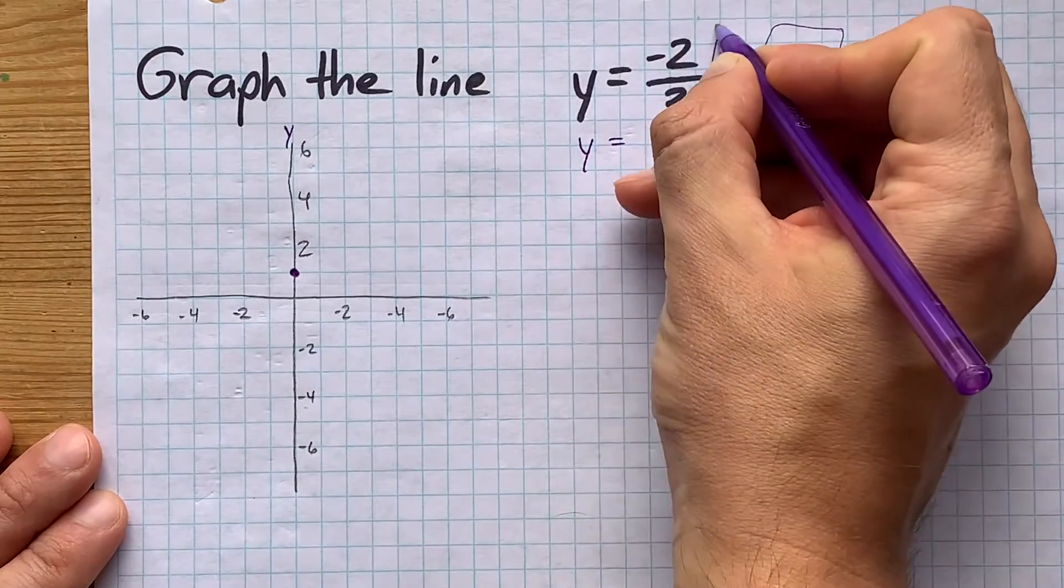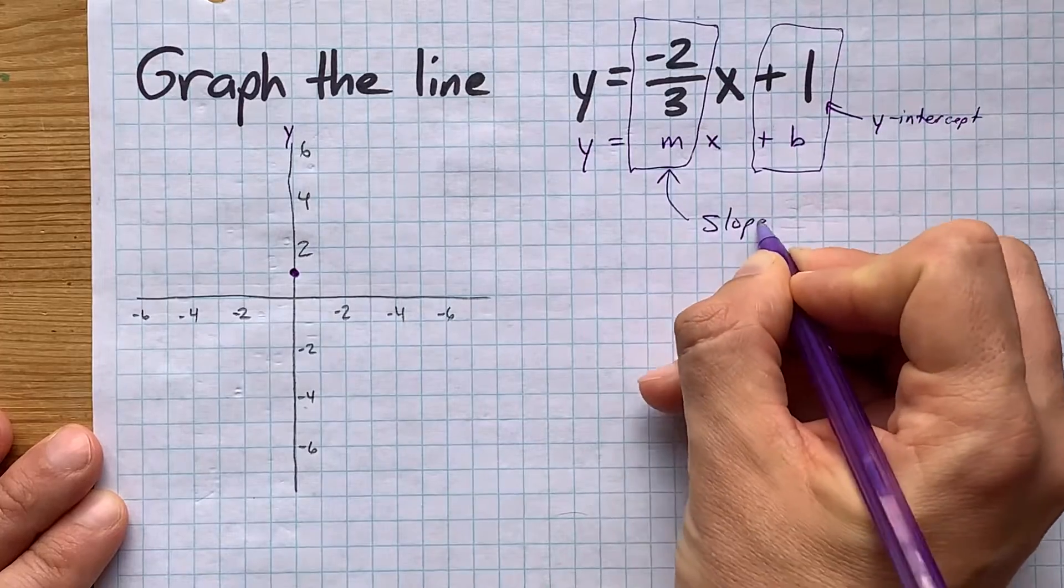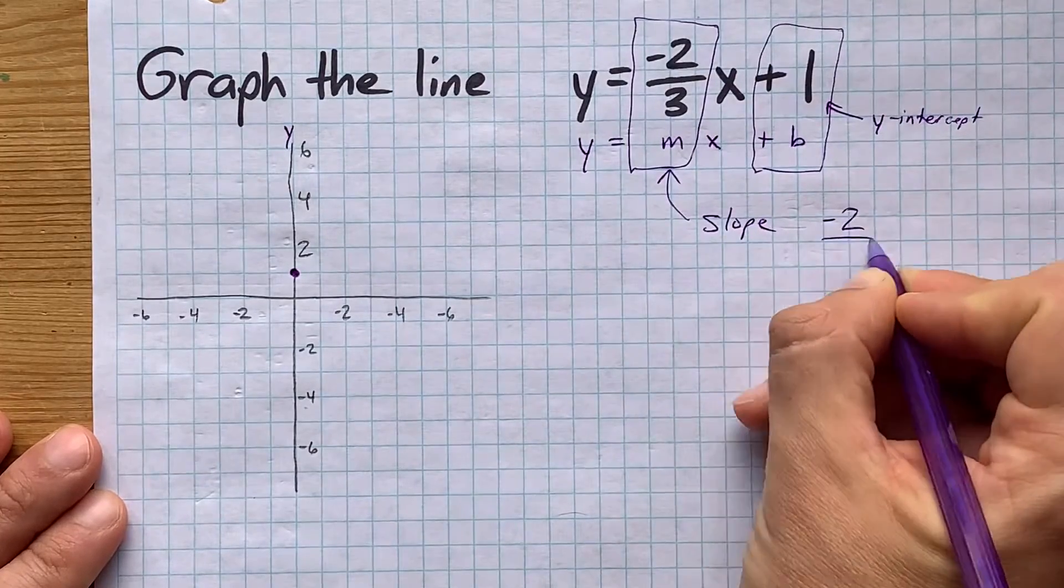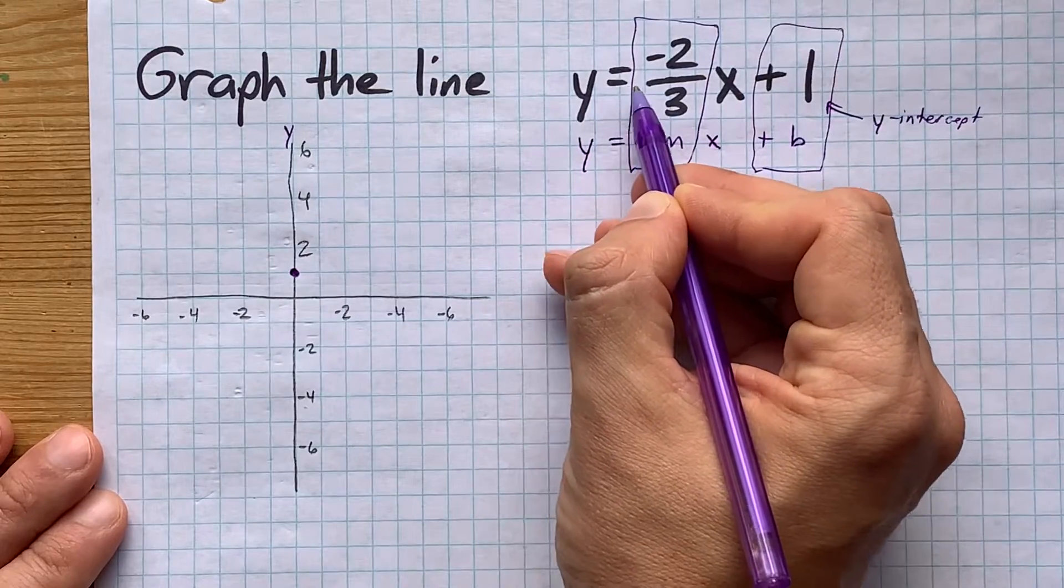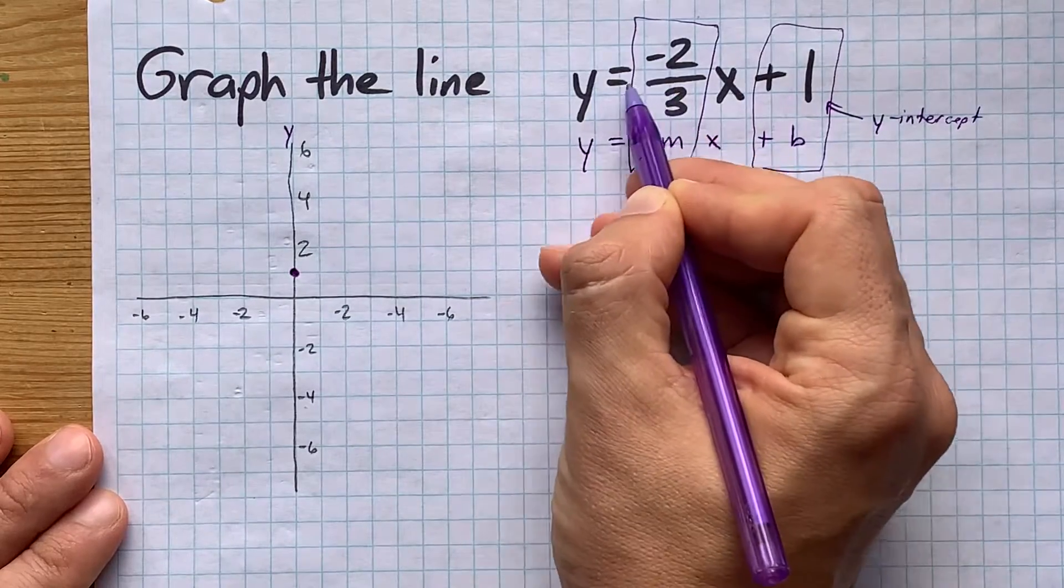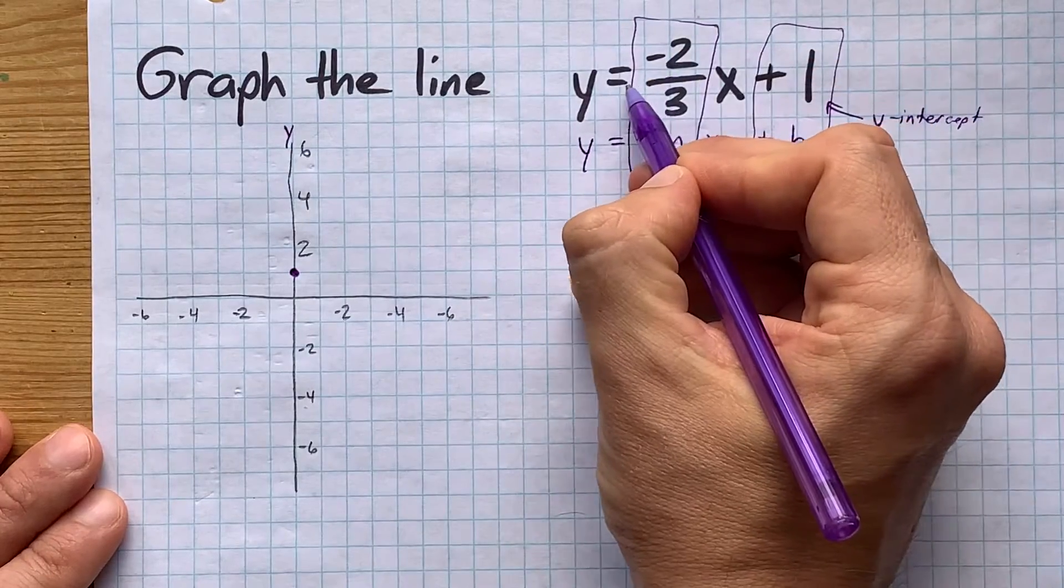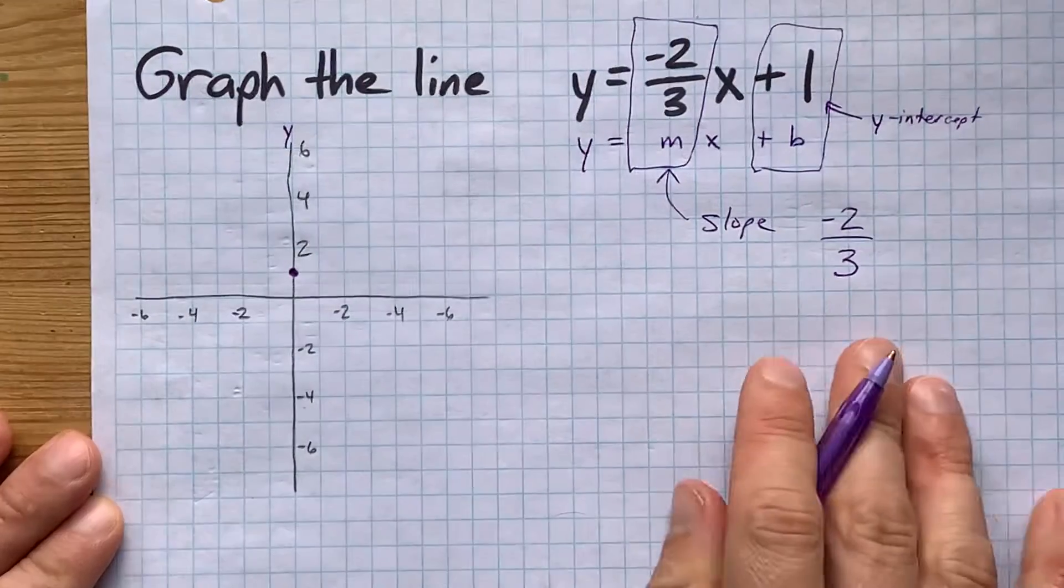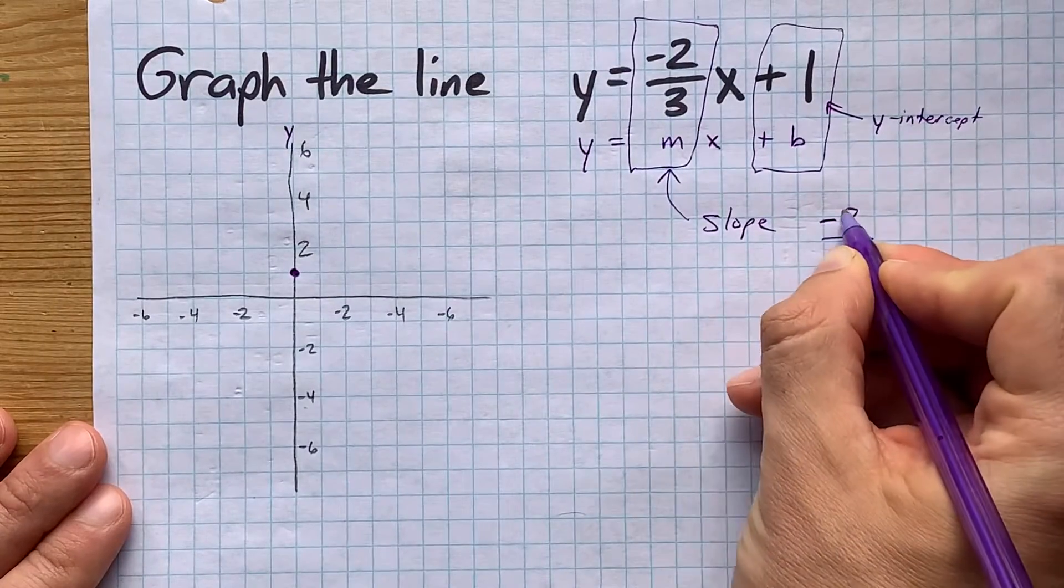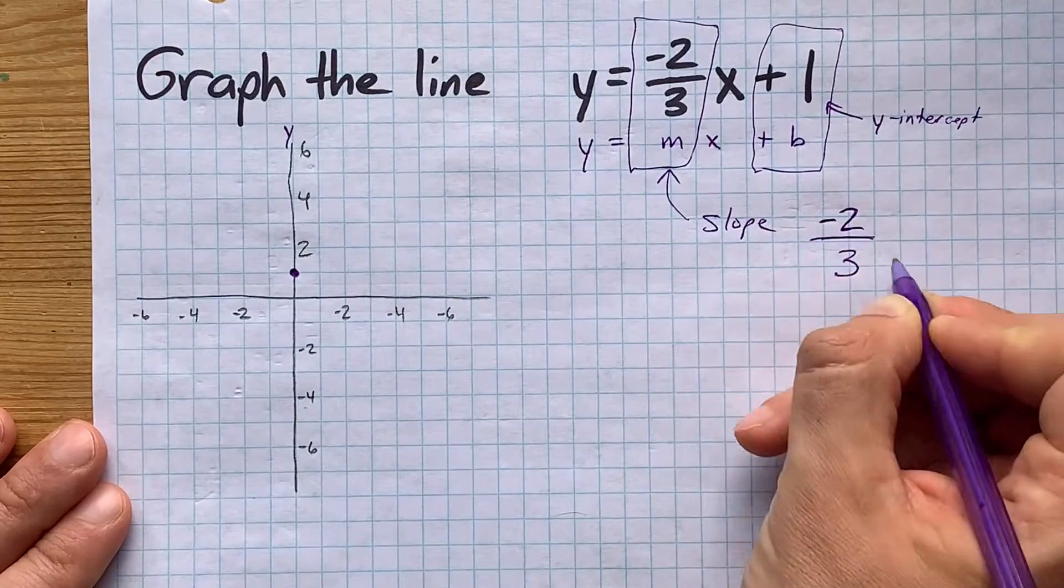Now the number multiplied by x is the slope. My slope here is negative two over three. If you have a negative in front of the fraction itself, not on the two, you can actually just move it to the two. A negative in front of the fraction or on the numerator is the same fraction. I think it's going to be clearer what direction to go in if you write that negative in the numerator.